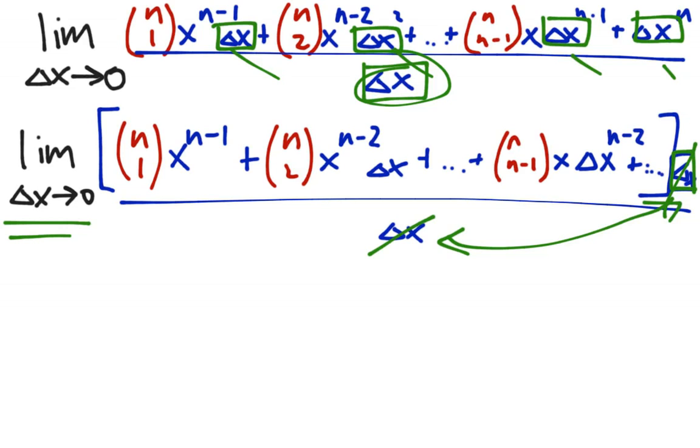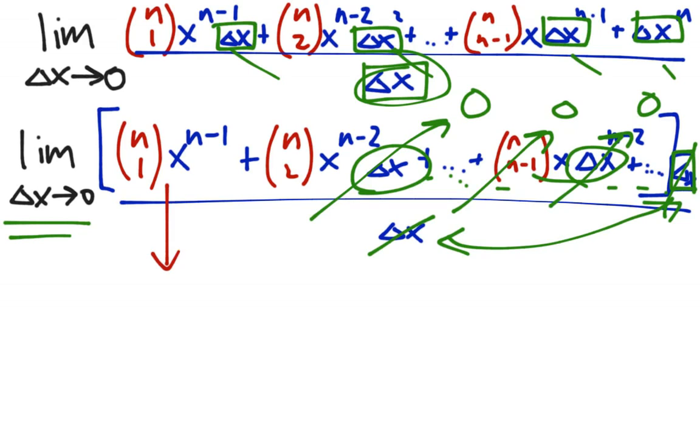I'm going to go ahead and do that in the same step. So look. This delta x, this delta x, and all the delta x's in between. Those all go to 0. So, hooray. Great. What are we left with? Well, we're left with this term here,